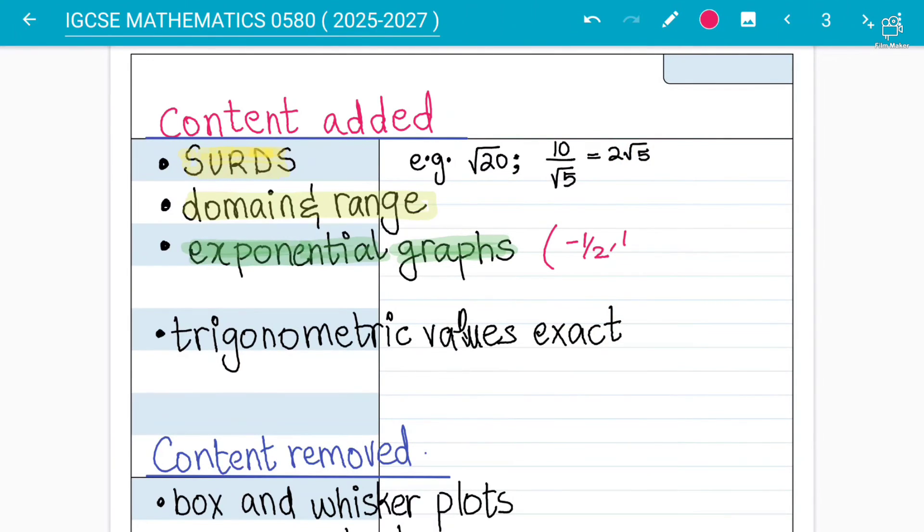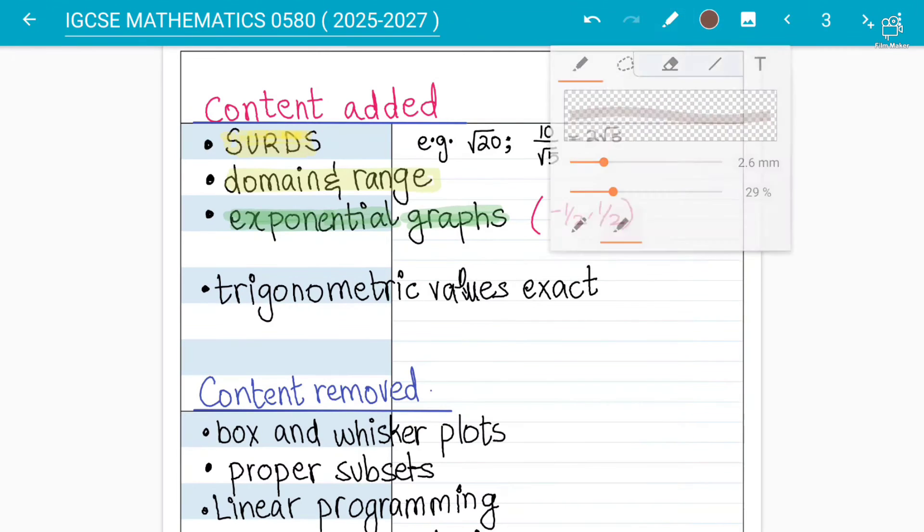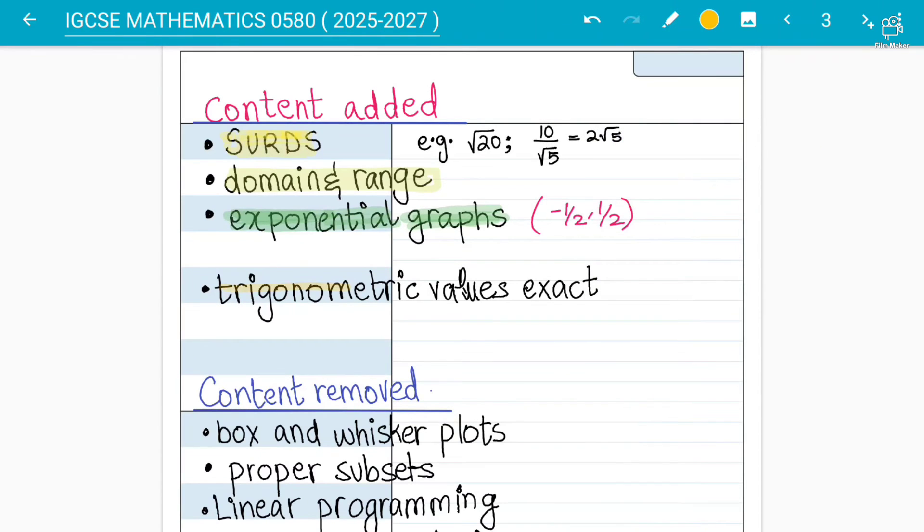We can say that now you'll be tested on exponential graphs as well where we have to communicate here that they can test you on the values of minus half and half. This is a special focus on the exam. And now again from the ad maths they have brought this here or from the AS level maths - trigonometric values will be there.